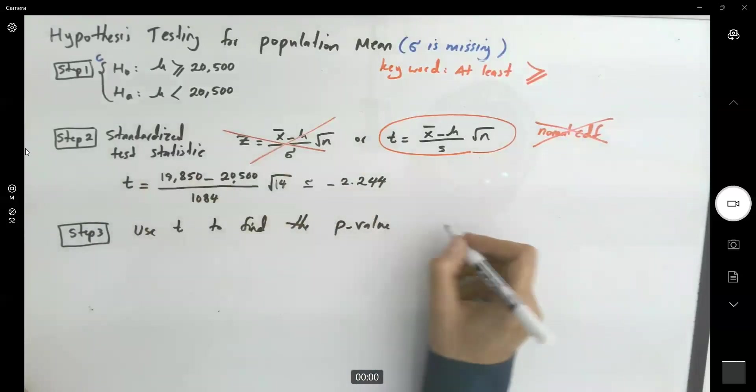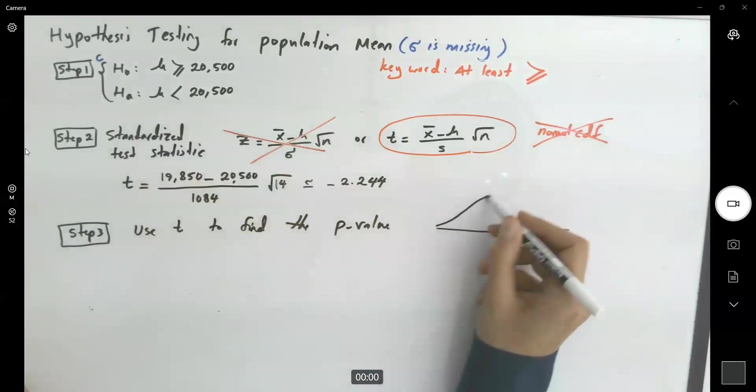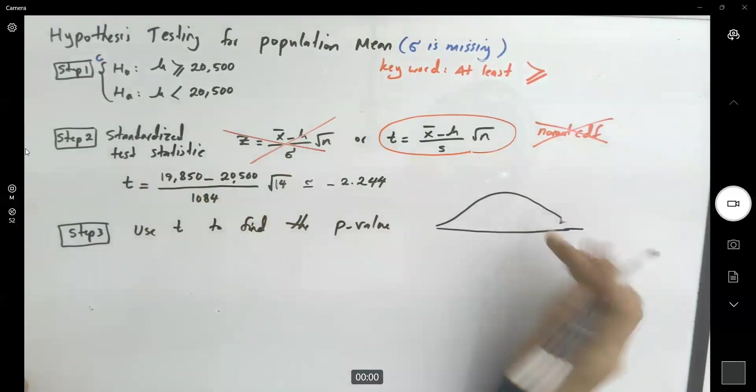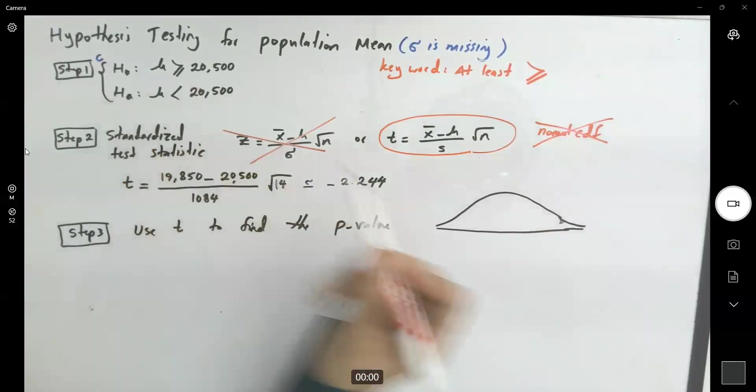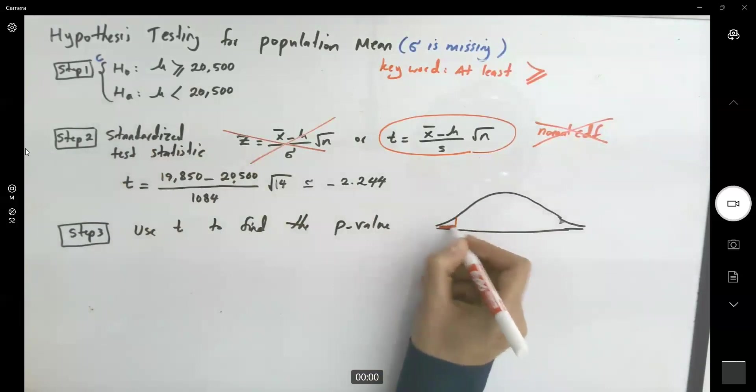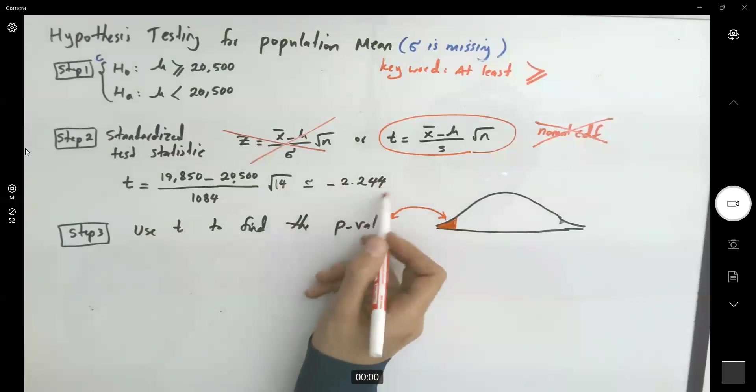Remember that it's a left-tailed graph. If you look at your graph, your graph is a left-tailed graph. Because your alternative hypothesis is less than, it means that you have a left-tailed graph. So we want to know what is this area, what is this p-value to the left side of negative 2.244.